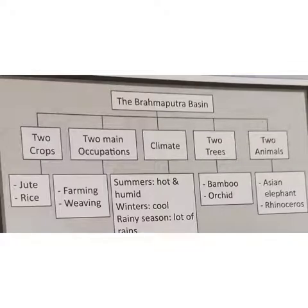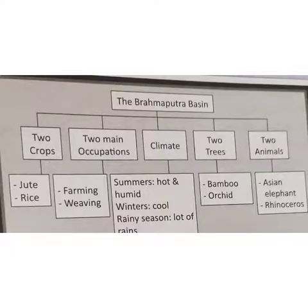The Brahmaputra Basin summary: main crops are jute and rice, and main occupations are farming and weaving. Climate — summers are very hot and humid, winters are cold, and the rainy season brings a lot of rain. Trees found here include bamboo and orchid; bamboo trees are commonly found in the plains of Assam. Animals found here include the Asian elephant and rhinoceros.